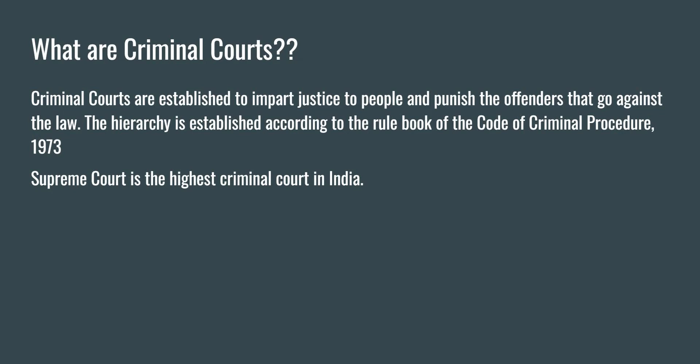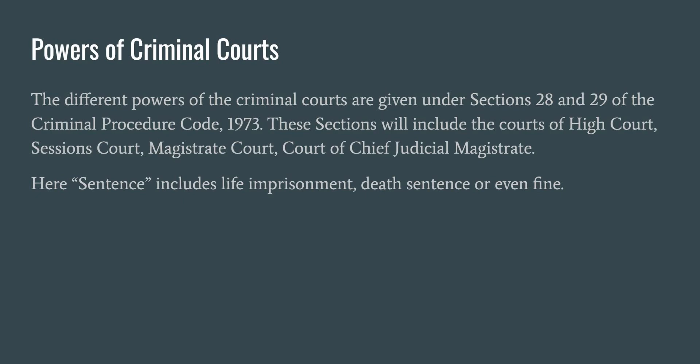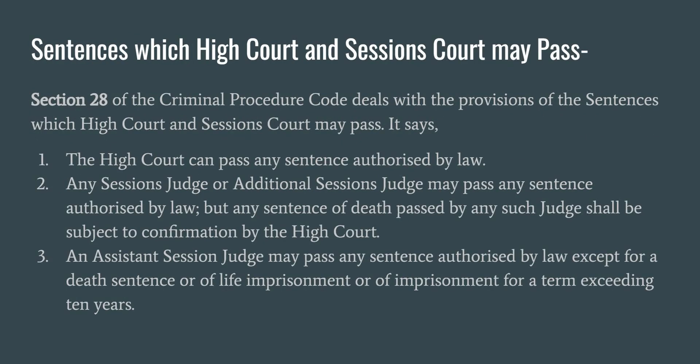The hierarchy of criminal courts is established according to the Code of Criminal Procedure, or CrPC. Here in India, the Supreme Court is the highest criminal court. The different powers of the criminal courts are given under sections 28 and 29 of the Criminal Procedure Code, 1973. These sections include the powers of the High Court, session court, magistrate court, and the court of the Chief Judicial Magistrate.